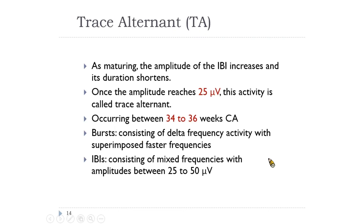As maturation proceeds, the amplitude of the IBI increases and its duration shortens. Once the amplitude reaches 25 µV, it is called tracé alternant (TA), occurring between 34 to 36 weeks. TA has bursts of delta-frequency activity with superimposed faster frequencies, separated by IBIs of mixed frequencies with amplitudes between 25 to 50 µV.